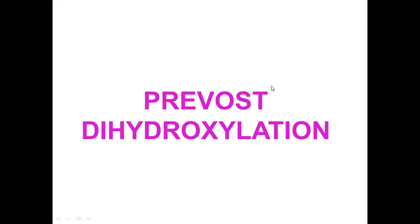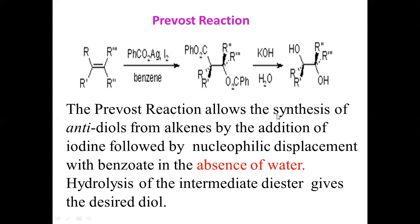Now we come to the discussion of the first reaction: Prévost dihydroxylation. In Prévost dihydroxylation, the reactants are alkenes. Alkenes in the presence of iodine and silver salts of benzoates or silver salts of acetates give diesters. These diester intermediates upon hydrolysis give diols. The diols formed in this case are anti-diols.